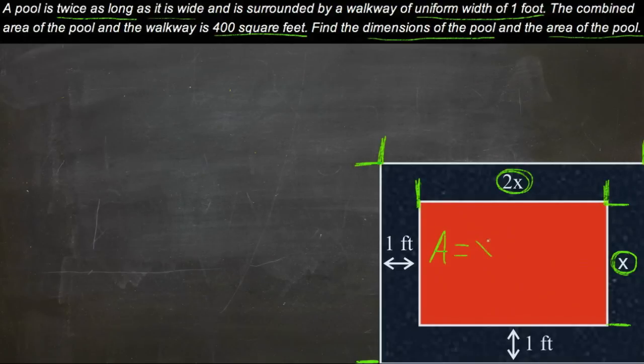will be x times 2x. But the area that we know is 2x plus 2, because we've got one width here and one width here.